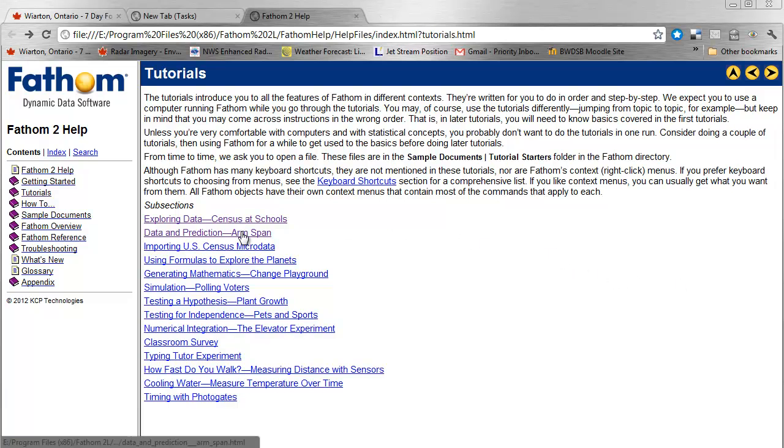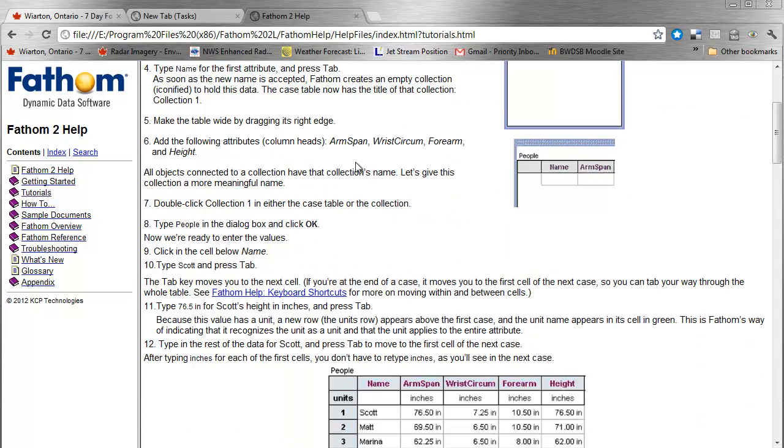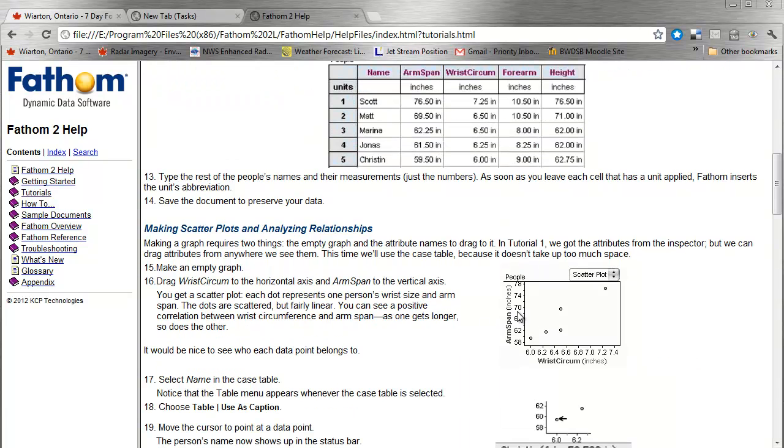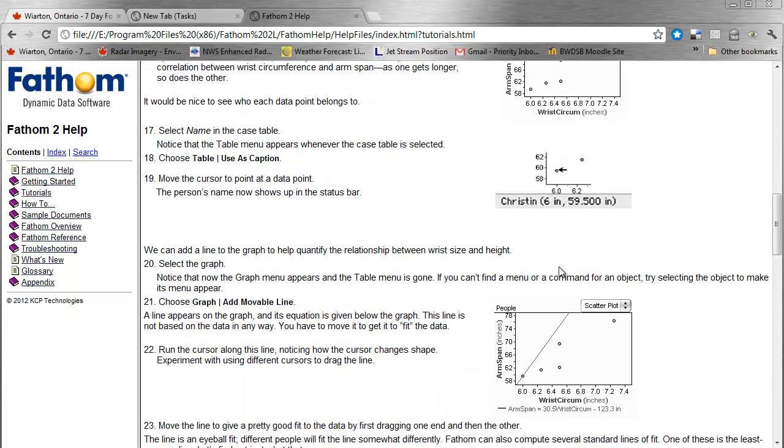There's a tutorial called Data and Prediction related to arm span. In this case, rather than opening up a pre-existing Fathom file, you're actually going to be entering the attributes yourself. You will use that to produce a plot with Fathom and you're going to be exploring how to analyze a regression using Fathom.